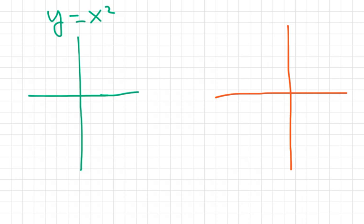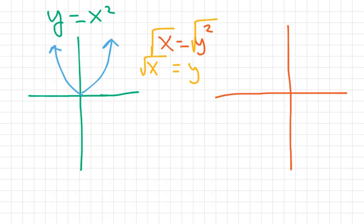Alright, we already know what y equals x squared looks like. It looks like this, something like this. Now, if I do the inverse of this function, the first step is to switch the x and the y. So I'm going to write it as x equals y squared, and then I'm going to solve for y. When I solve for y, I take the square root of both sides, and I get y equals square root of x.